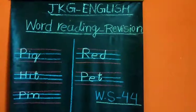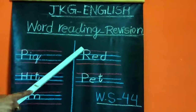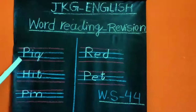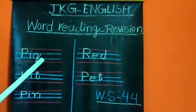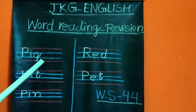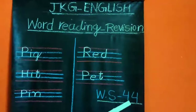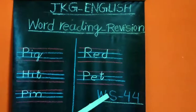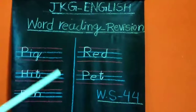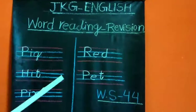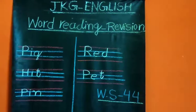Now what you have to do — you have to do the reading of all these words with the help of beginning sound, middle sound and end sound. Then after reading these words, you have to do worksheet number 44. On worksheet number 44, pictures are given. You have to match these words with the pictures. Bye-bye.